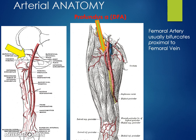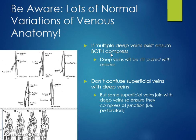The arterial anatomy is essentially the same as the deep venous anatomy, with the exception that the common femoral artery bifurcates a little bit more proximally than the vein bifurcation — the artery bifurcates first, then the vein bifurcates. Be aware there are lots of normal variations in venous anatomy, particularly when you get down to the popliteal region, with lots of variation.